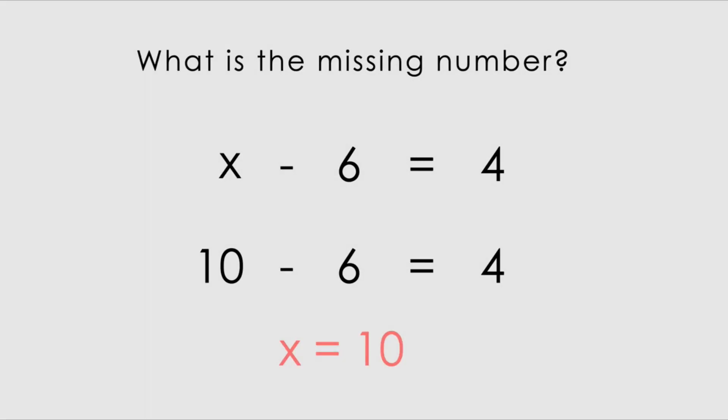Let's have a look at this worked example first. We've got x minus 6 equals 4 and they want us to find what x is. Working backwards, we can see that x should be bigger than 6 and it should be 4 more bigger than 6, because you take away 6 from x, you're left with 4.